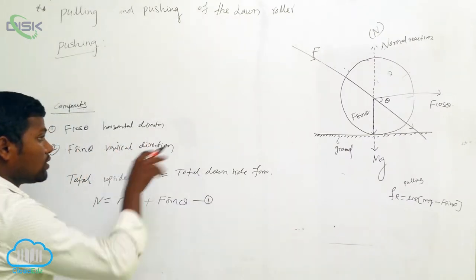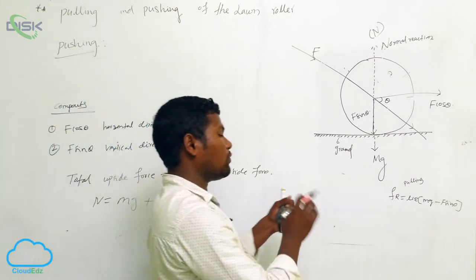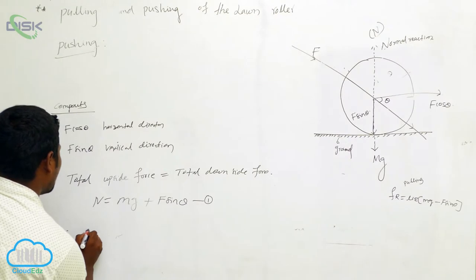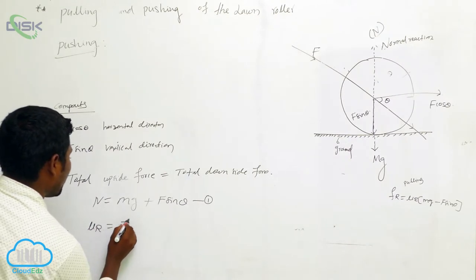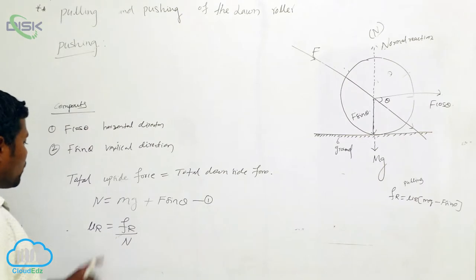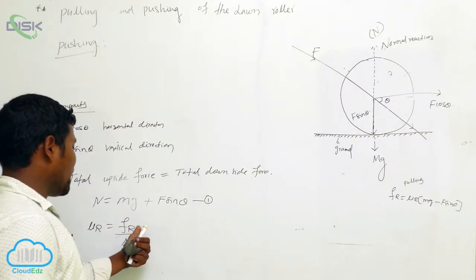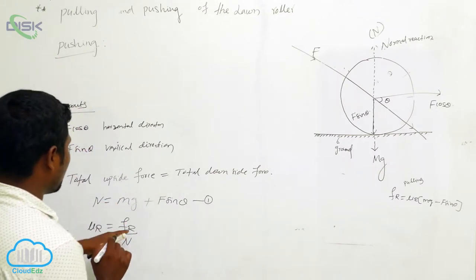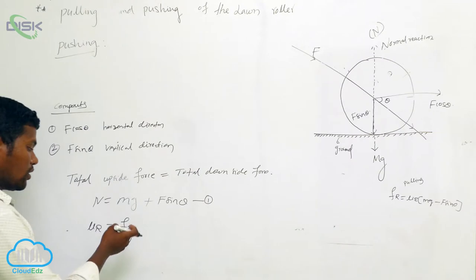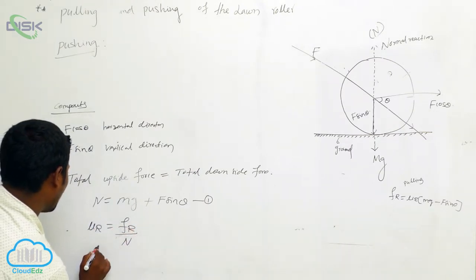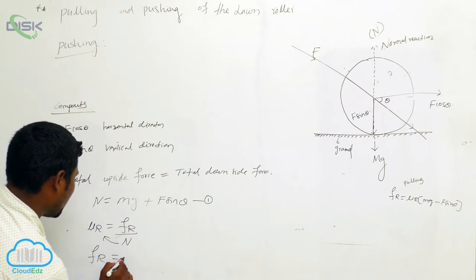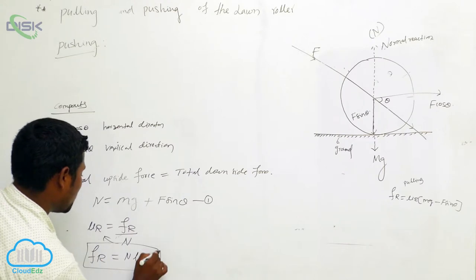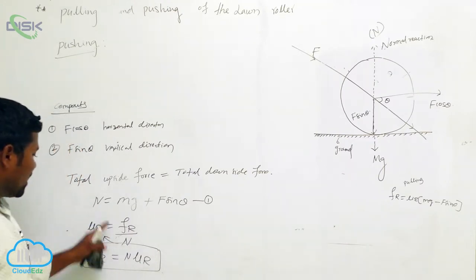Next, when you apply force, the roller makes a revolution — it is rolling. So then rolling friction applies. The coefficient of rolling friction μr is equal to Fr divided by N. We already arrived at N. Now we are going to find whether pulling is easier or pushing is easier. So for pushing, the rolling friction Fr equals N into μr.